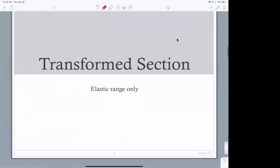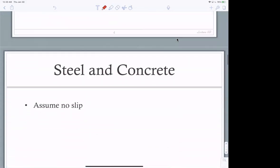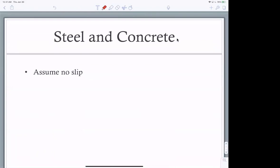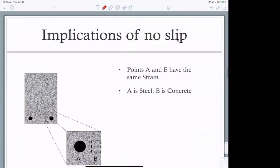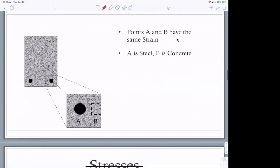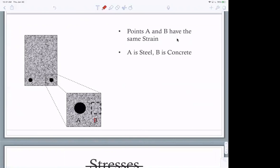Now in the elastic range only, so this is for small loads, we're going to do something called the transform section. The reason it's called transform is we're going to transform the steel and the concrete, as you'll see in a little bit. So there's steel and concrete in this column. And again, we're going to assume no slip. That means the strain in the concrete has to equal the strain in the steel. They have to stretch the same amount. So the implications of that, here's this picture. I've got, you can't see that, but this is B and A. The A is steel, B is concrete, and those two things are going to stretch the same amount in this beam, for example.